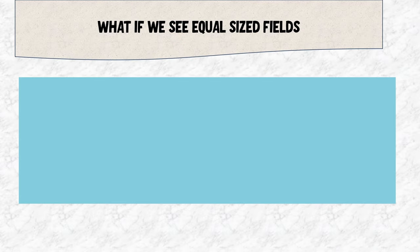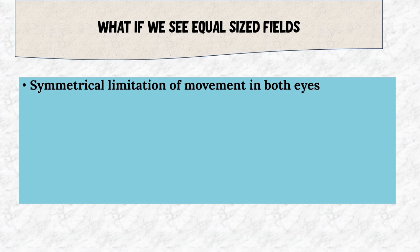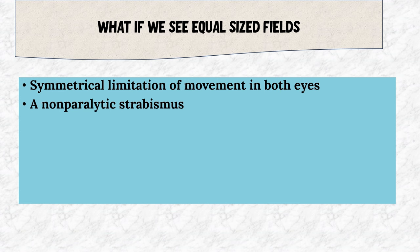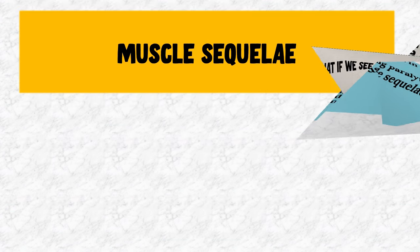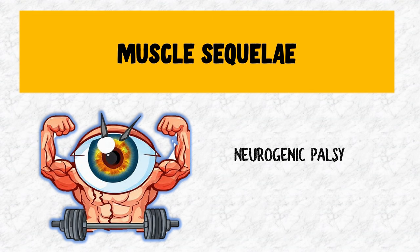Sometimes the fields appear equal in size. This means either there is symmetrical limitation of movement in both eyes, or you are dealing with a non-paralytic strabismus where there are no muscle sequelae responsible for the size difference. Or in a very long-standing paralytic strabismus, muscle sequelae may develop and lead to concomitance. Muscle sequelae are typically seen in cases of neurogenic palsy.